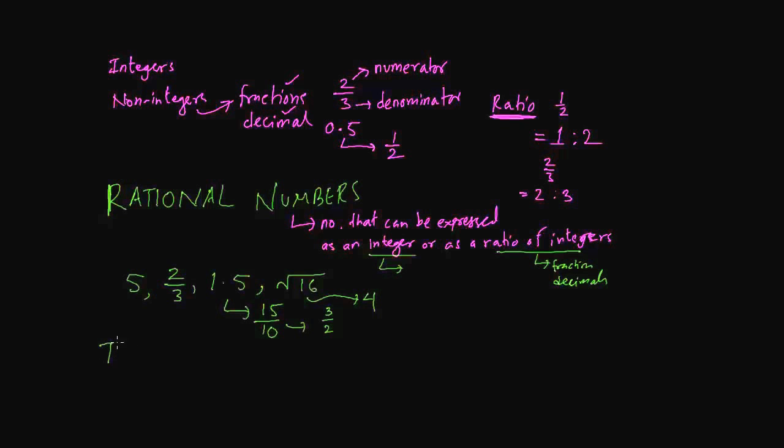So the next concept is IRRATIONAL NUMBERS. Irrational numbers are numbers that cannot be expressed as an integer or a ratio of an integer. That's an irrational number.